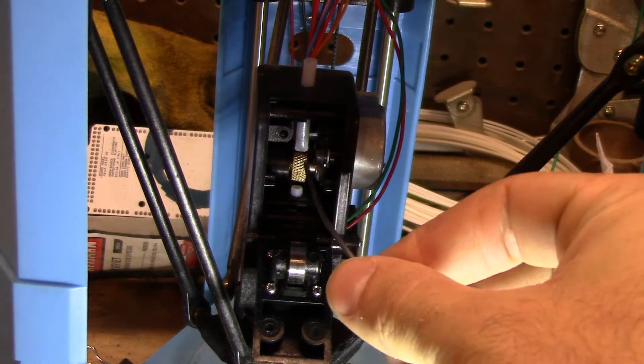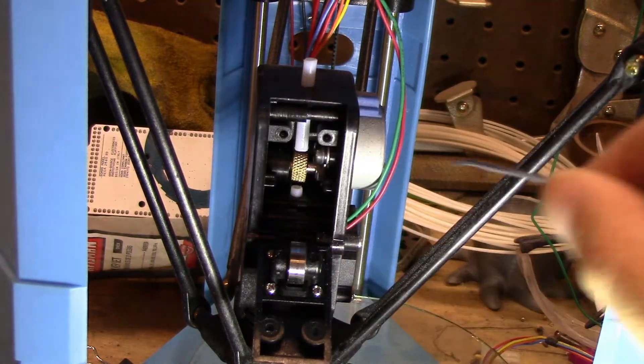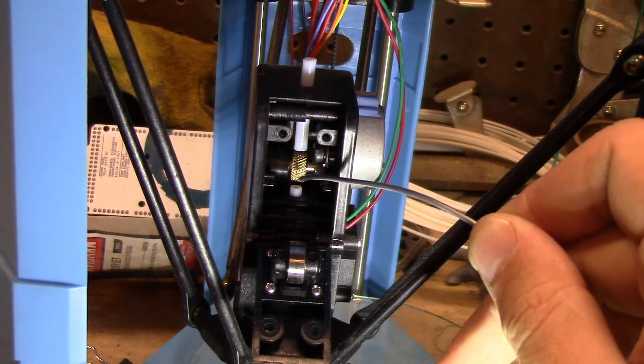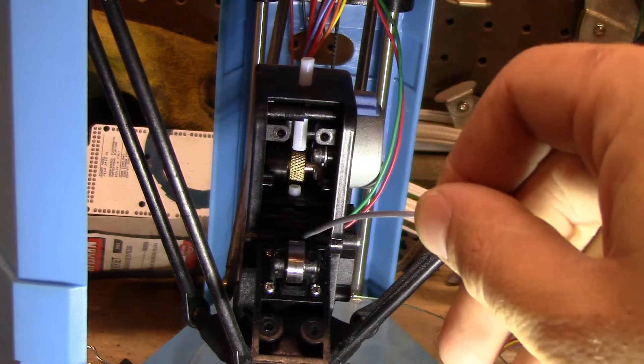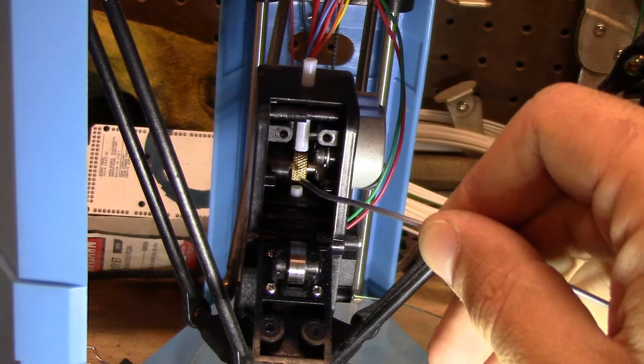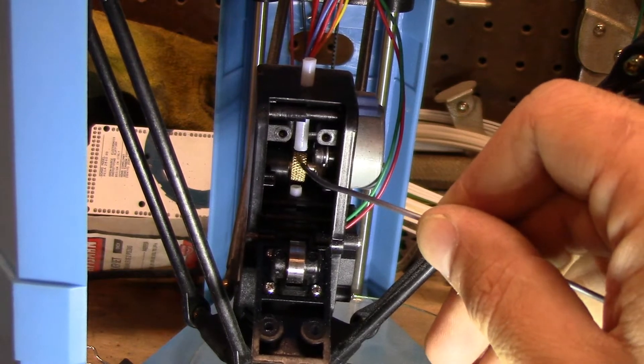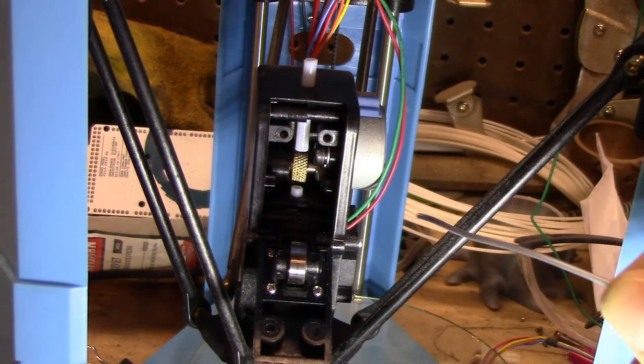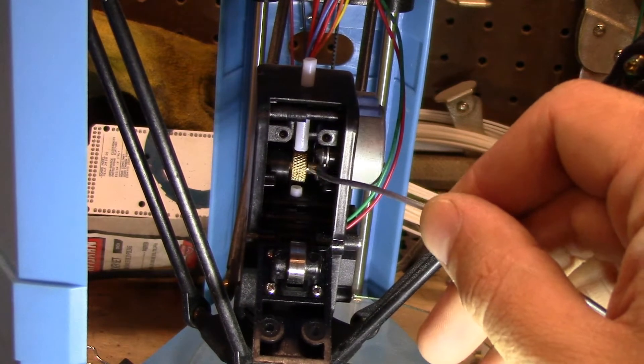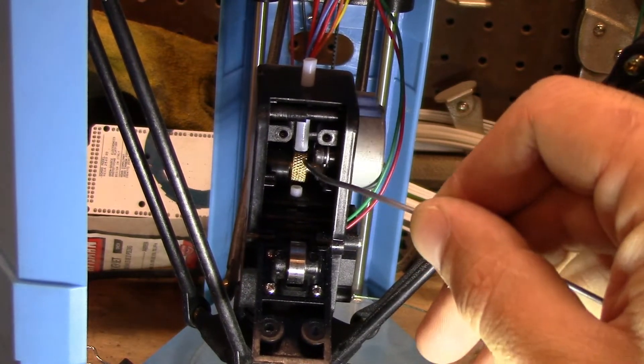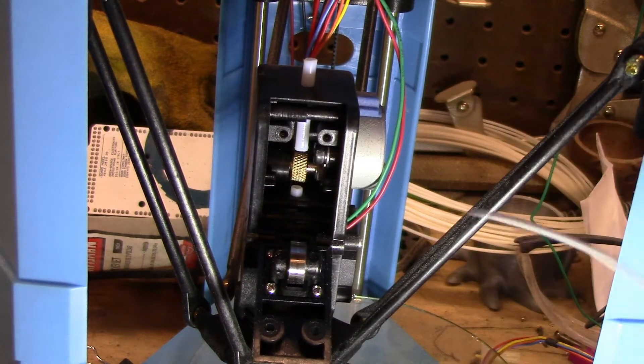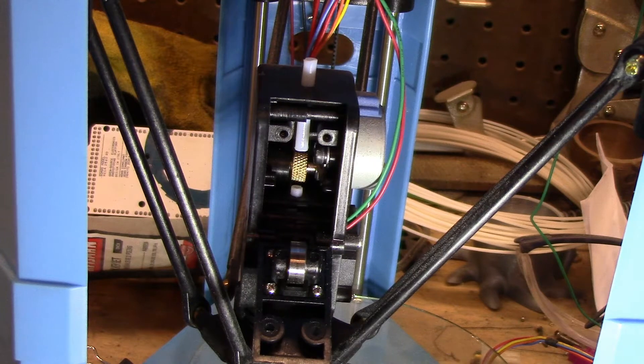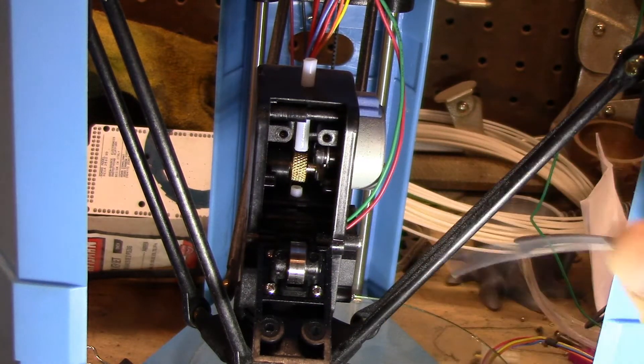If the nozzle is clean, you're able to feed through, but you're not extruding, so this is the knurled, crap I just forgot what they're called, hob. I call it a knurled hob, that's probably not the right word.